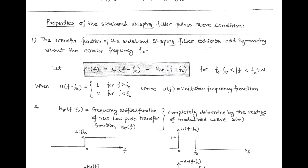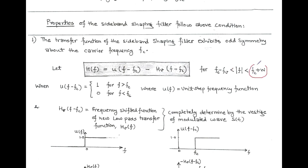According to the first property, the transfer function of the sideband shaping filter must exhibit odd symmetry, given by the second term which totally depends on the vestige of the VSB signal. This transfer function is band-limited between Fc minus Fv and Fc plus W, where Fc plus W is the higher frequency component and Fc minus Fv is the lower frequency component. The transmission bandwidth of the sideband shaping filter is therefore Fv plus W, where W is the message signal bandwidth.